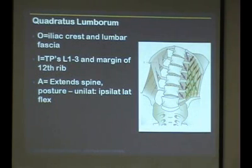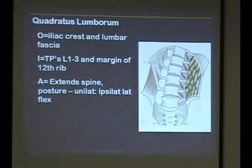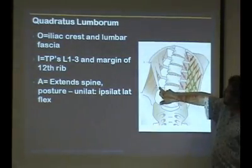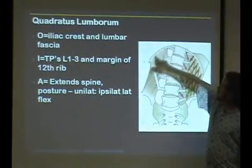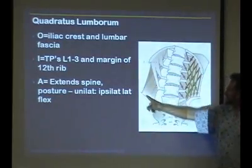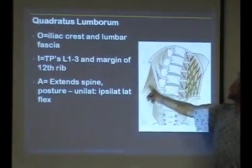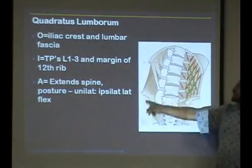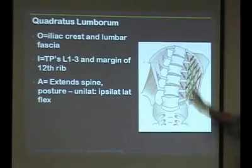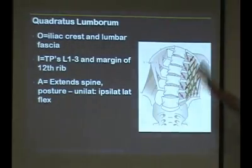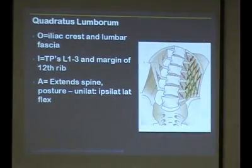This picture shows that there are sometimes considered to be three different parts of the quadratus lumborum: one part going from the transverse processes to the rib, another part going from the iliac crest toward the transverse processes, and then other fibers that run more vertically from the iliac crest to the ribs.